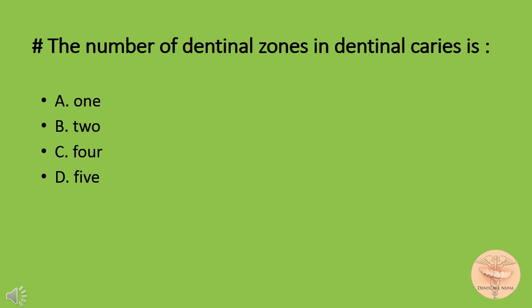The number of dentinal zones in dentinal caries is: option A) 1, option B) 2, option C) 4, or option D) 5. The correct answer is option D: 5. Five zones are found in dentinal caries.